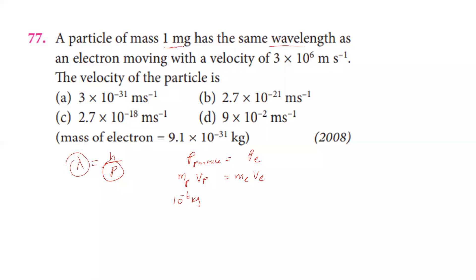The mass of the particle is 1 milligram, which is 10 to the power minus 6 kilograms. The velocity of the electron is 3 times 10 to the power 6 meters per second.